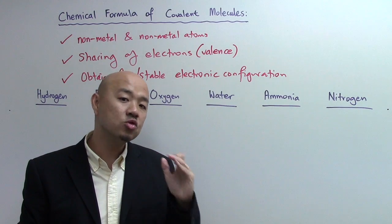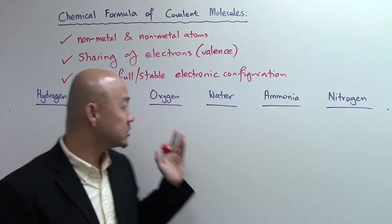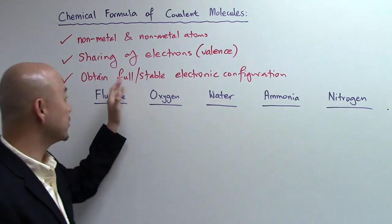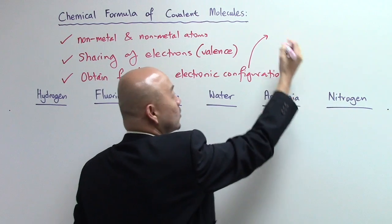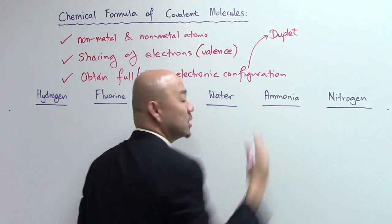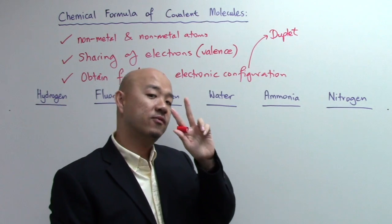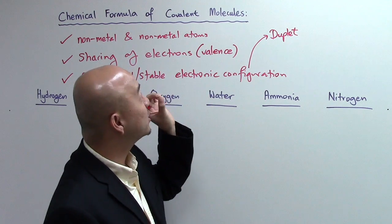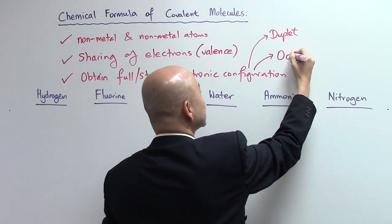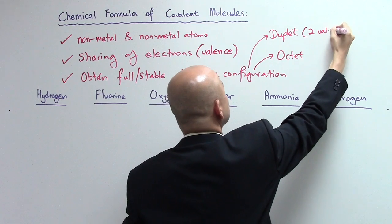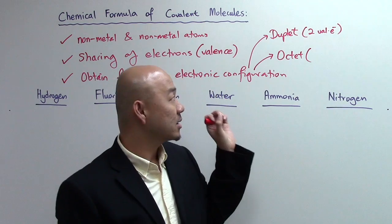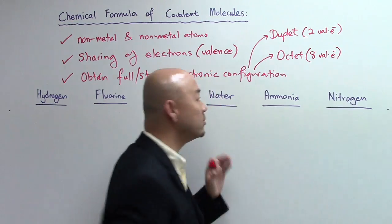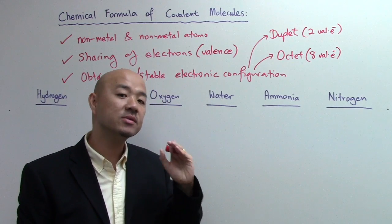Just like group zero — helium, neon, argon — that is what you want to achieve. When you talk about noble gas electronic configuration, there are two types. One is called the duplet: two valence electrons in the first shell, which makes the atom very stable — for example, helium. The other is the octet, from the word 'octagon,' meaning eight valence electrons in the outermost shell, making the configuration very stable.